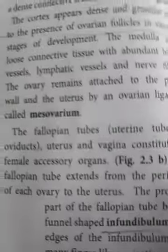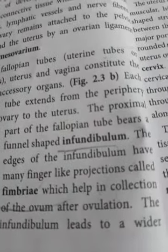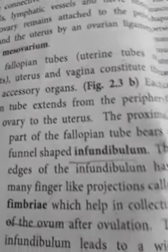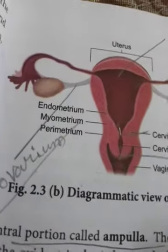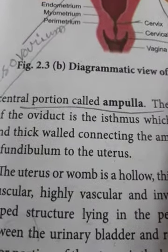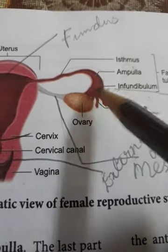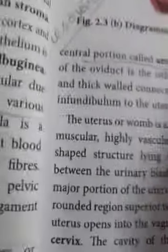The proximal part of the fallopian tube bears a funnel-shaped structure called the infundibulum. The tip of the infundibulum has finger-like projections called fimbriae, which help in collection of the ovum after ovulation. The infundibulum leads to a wider swollen structure called the ampulla. The last part of the oviduct is called the isthmus, which connects to the uterus.